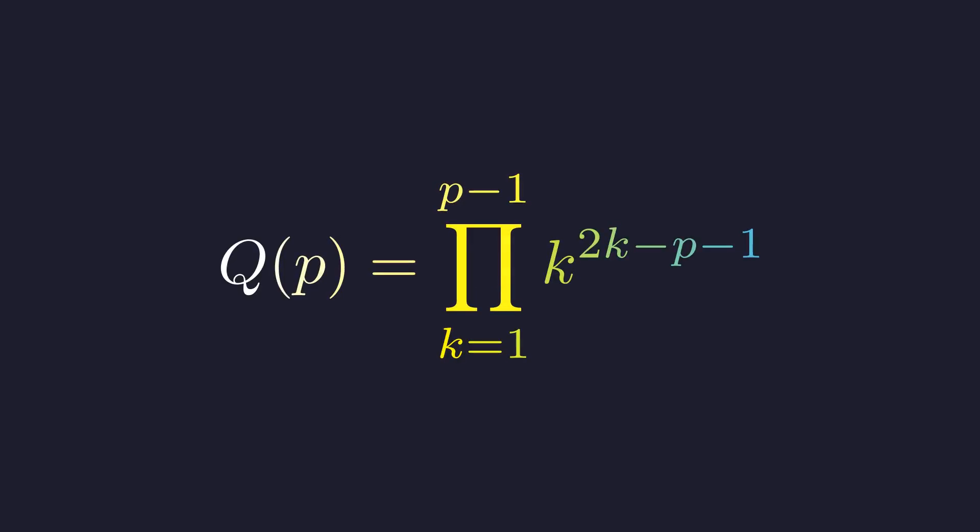Here's a claim that might make you do a double take: this wild looking product where we're raising each number k to the power 2k minus p minus 1 is supposedly always an integer when p is prime.